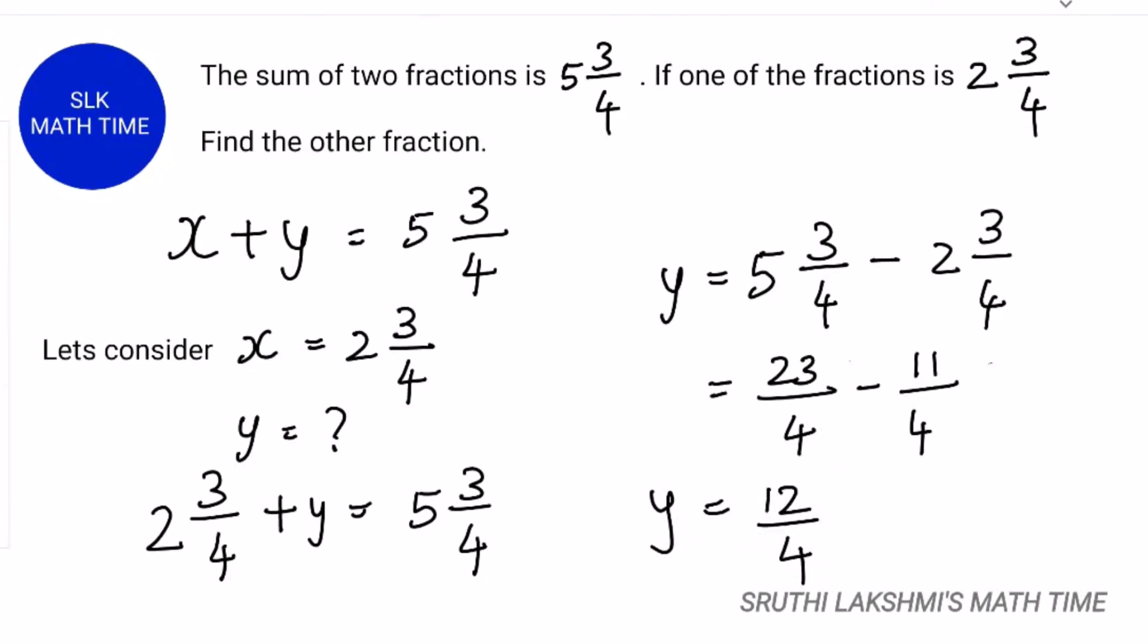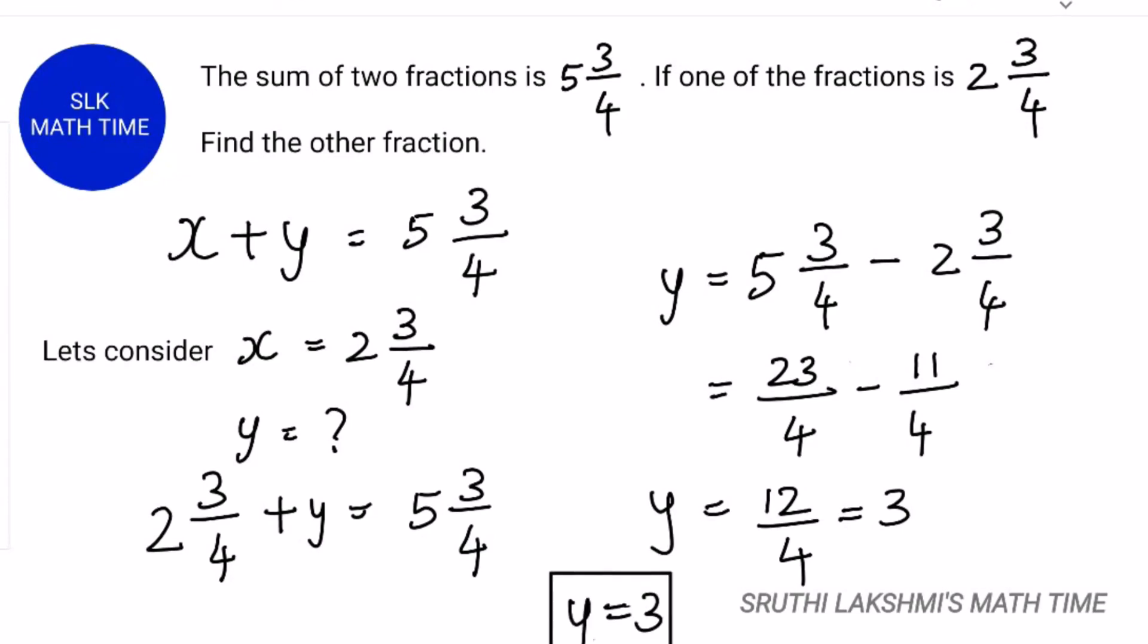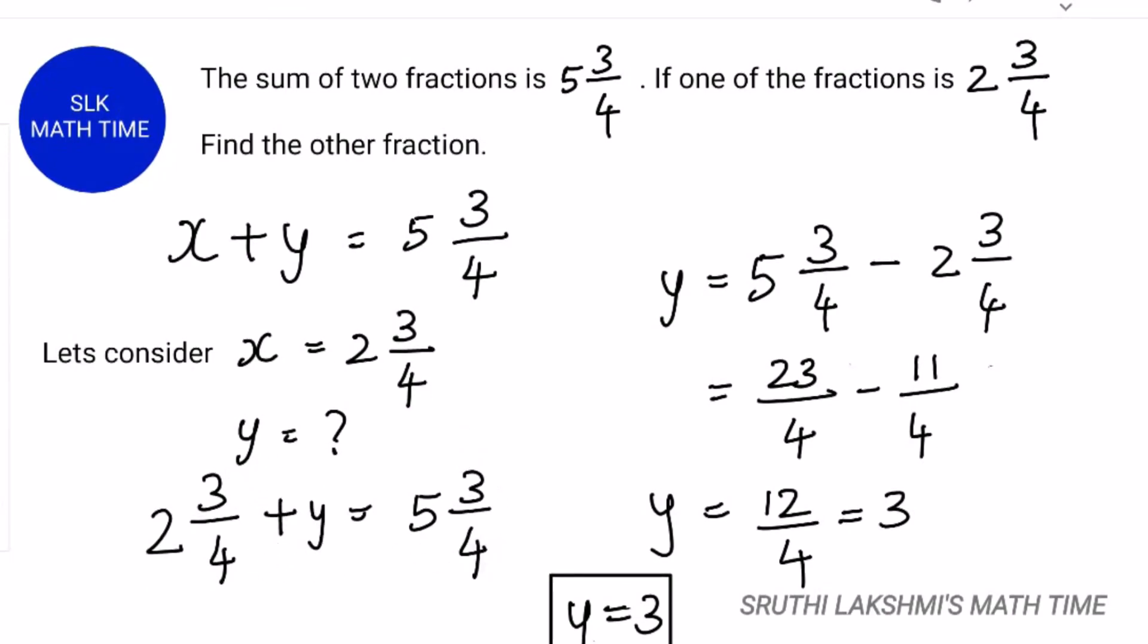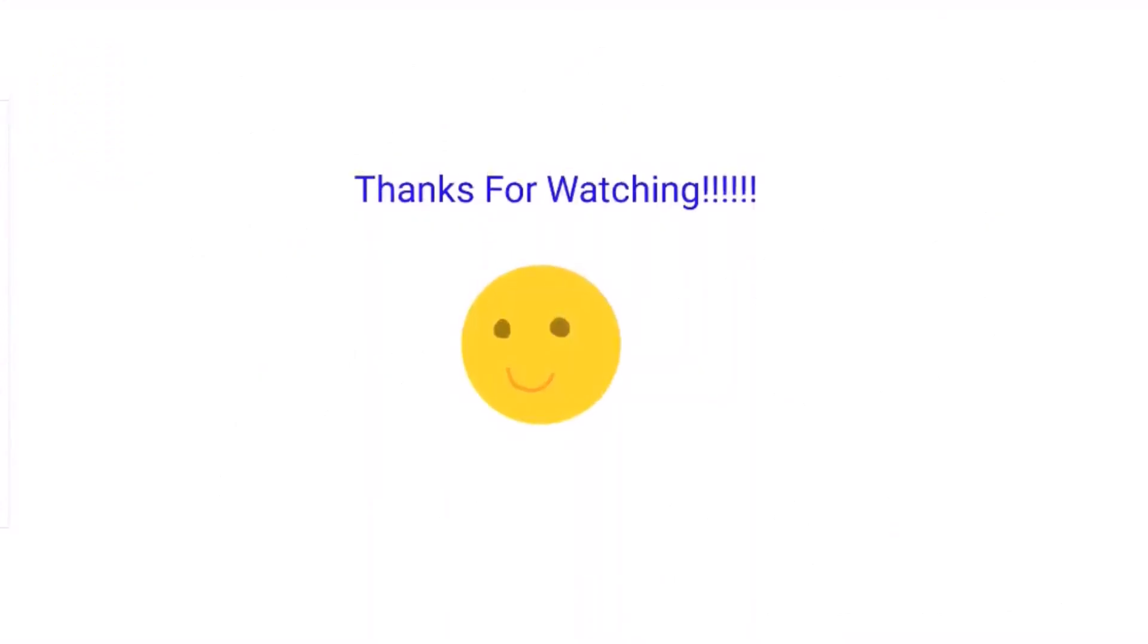When we simplify 12 by 4, we get 3. Now we know that y is 3. So 2 3 by 4 plus y which is 3 equals 5 3 by 4. Thanks for watching.